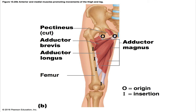The adductor magnus is a triangular muscle with a broad insertion, a composite muscle that's part adductor and part hamstring in action. Its origin is the ischial and pubic rami and ischial tuberosity, and its insertion is the adductor tubercle of the femur. The anterior part adducts, medially rotates, and flexes the thigh; the posterior part is a synergist of the hamstrings in thigh extension. It's innervated by the obturator and sciatic nerves. The adductor longus overlies the middle aspect of the adductor magnus and is the most anterior adductor; it adducts, flexes, and medially rotates the thigh, innervated by the obturator nerve. The adductor brevis is largely concealed by the adductor longus and pectineus; its origin is the body and inferior ramus of the pubis, inserting on the linea aspera above the adductor longus. It adducts and medially rotates the thigh, also innervated by the obturator nerve.